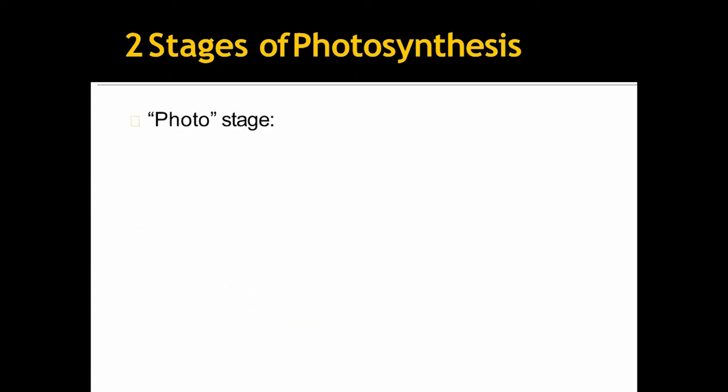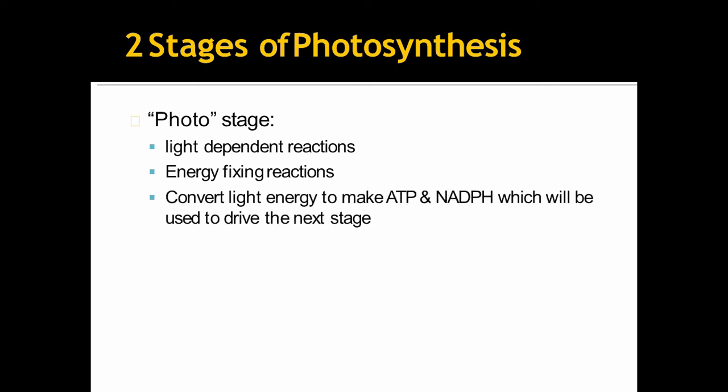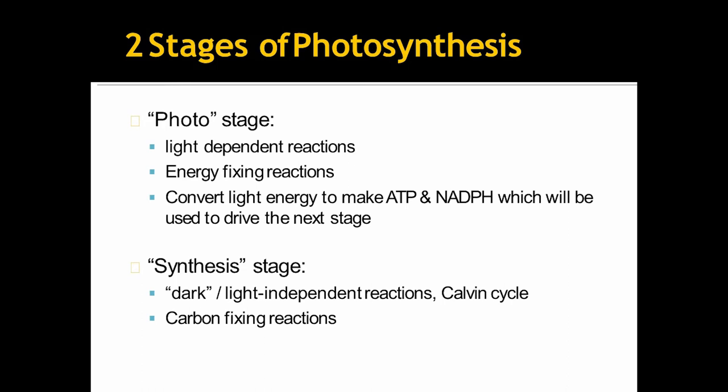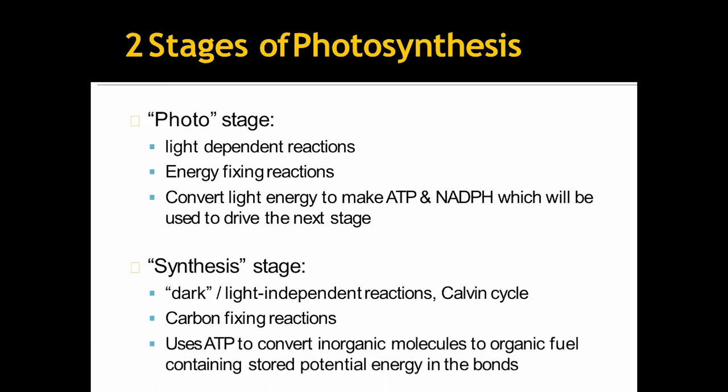There are two stages of photosynthesis. First one is photo stage where light dependent reactions happen. Energy fixing reactions also occur in photo stage. They convert light energy to make ATP and NADPH which will be used to drive the next stage. And the next stage is synthesis stage. It is light independent reaction happens. It is also known as dark stage or Calvin cycle. Carbon fixing reactions happen here. It uses ATP to convert inorganic molecules to organic fuel containing stored potential energy in the bonds. We will only discuss about the photo stage here.